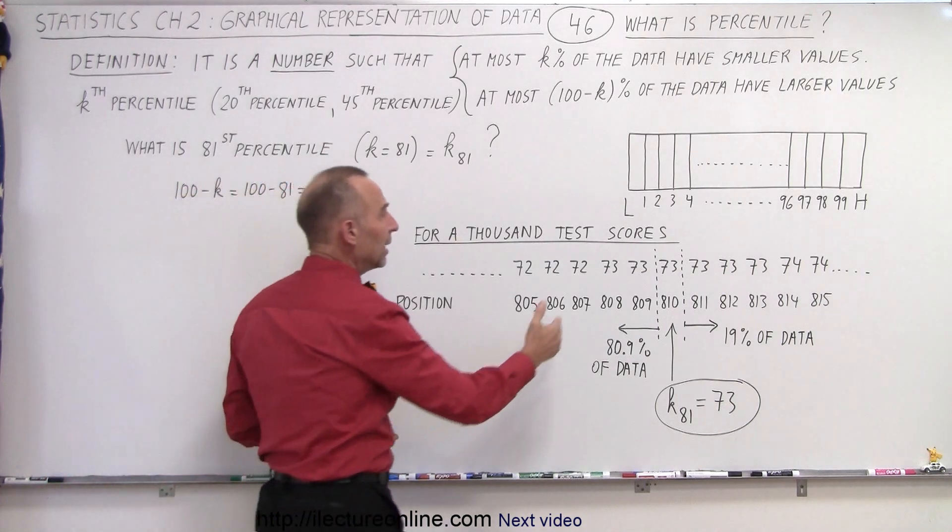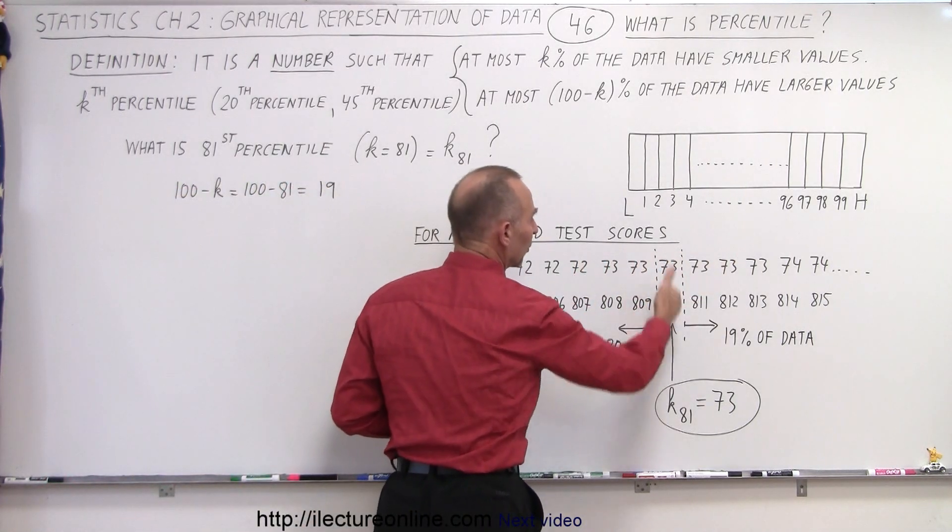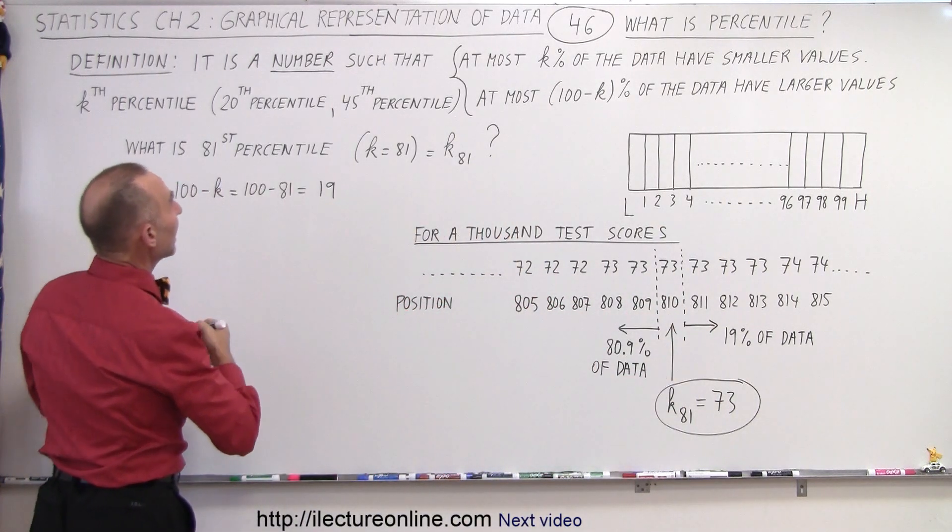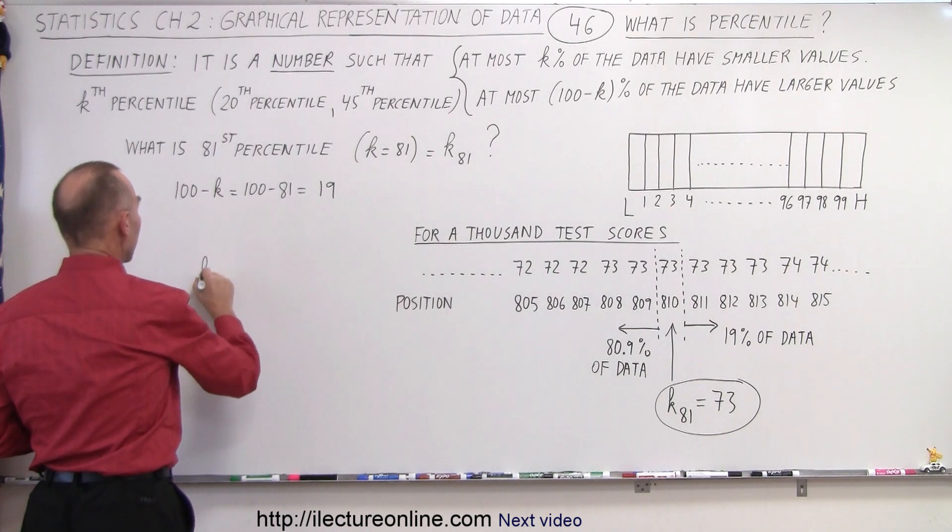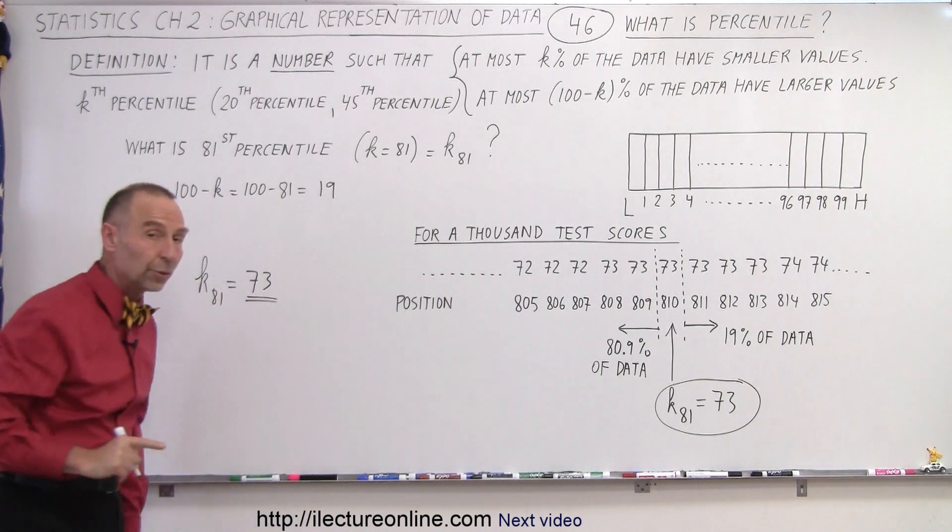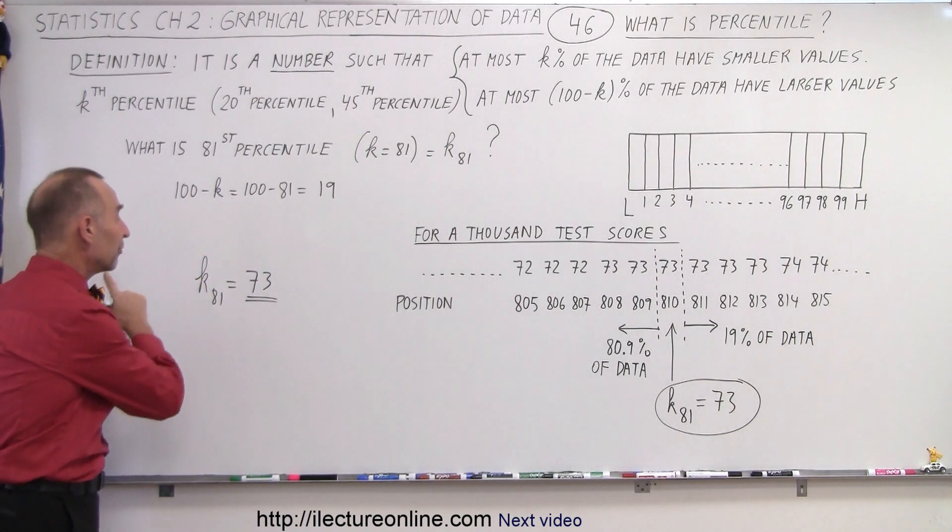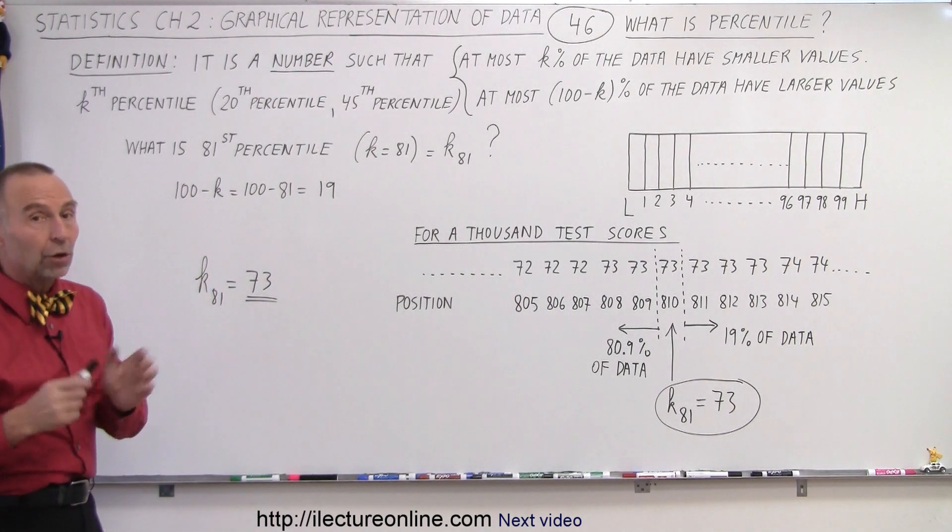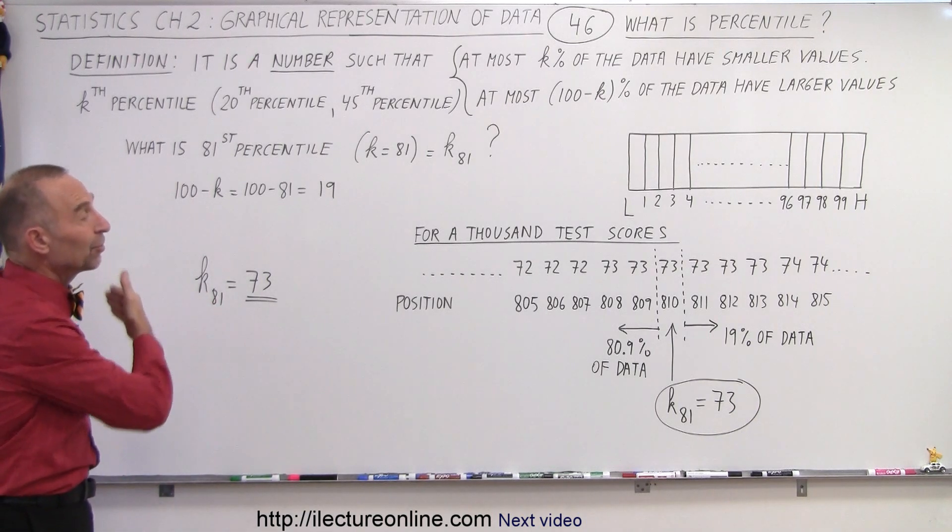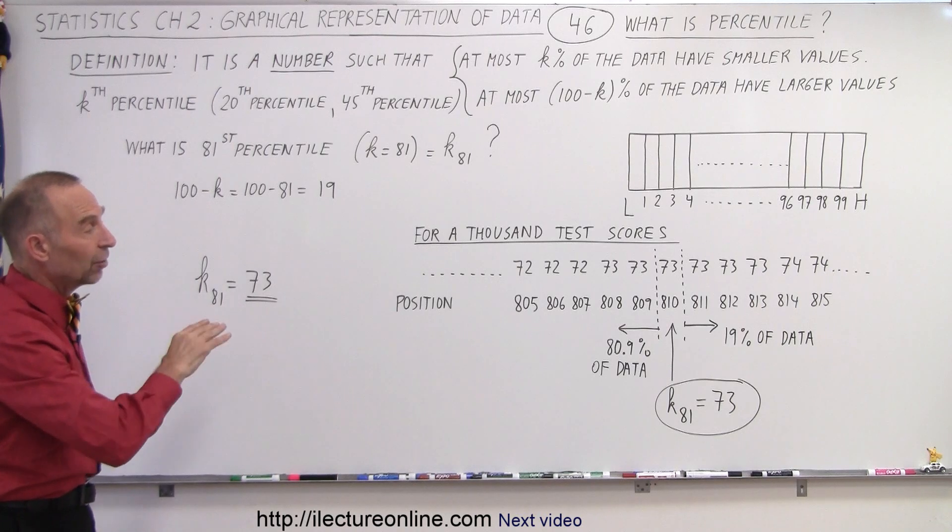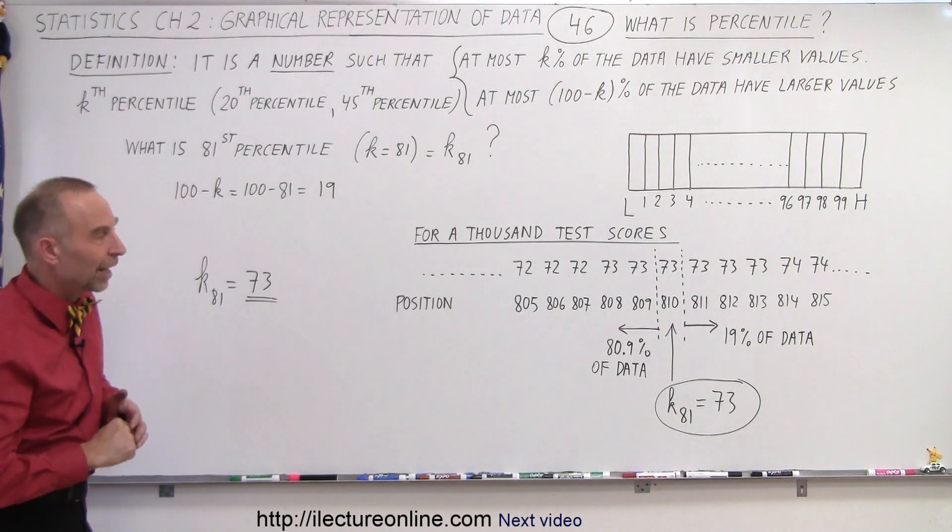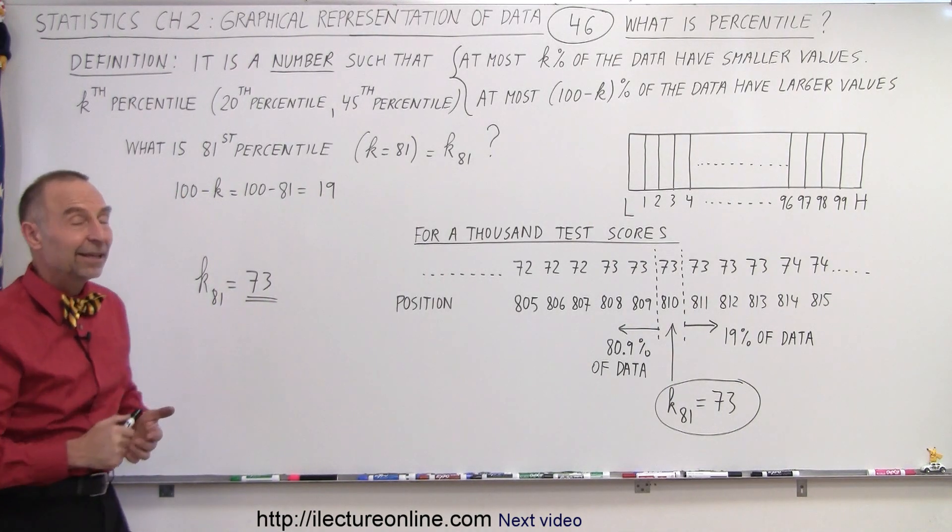So notice, again, any one of these points has the same value, but we're looking after this particular point. So the answer is, what is the 81st percentile? K81 is equal to 73. So a score of 73 represents the 81st percentile, which means that all students that scored a 73 scored better, essentially, than 81% of the students, and not as good as 19% of the students, more or less, plus or minus a couple of data points. And that is how it's done.